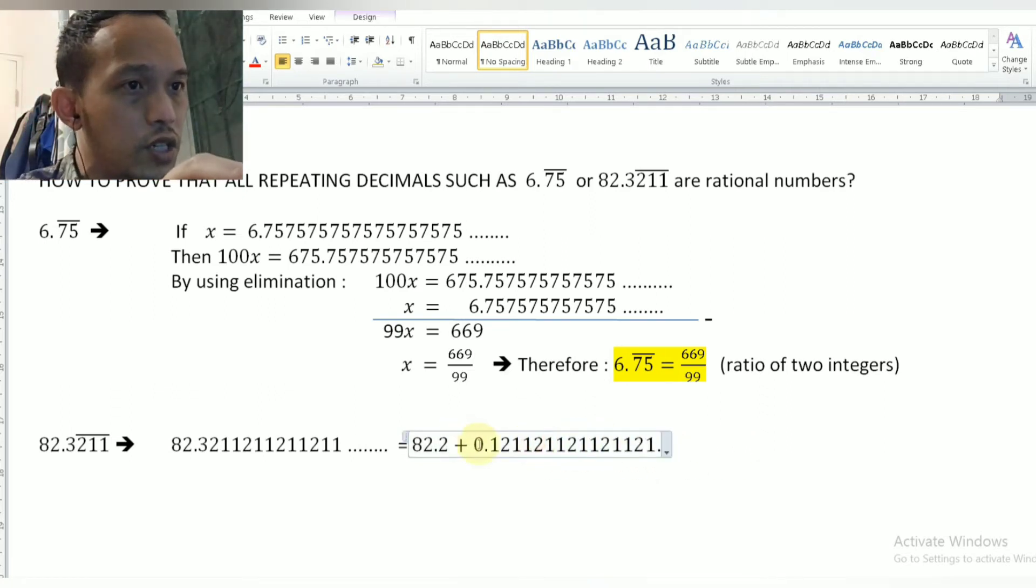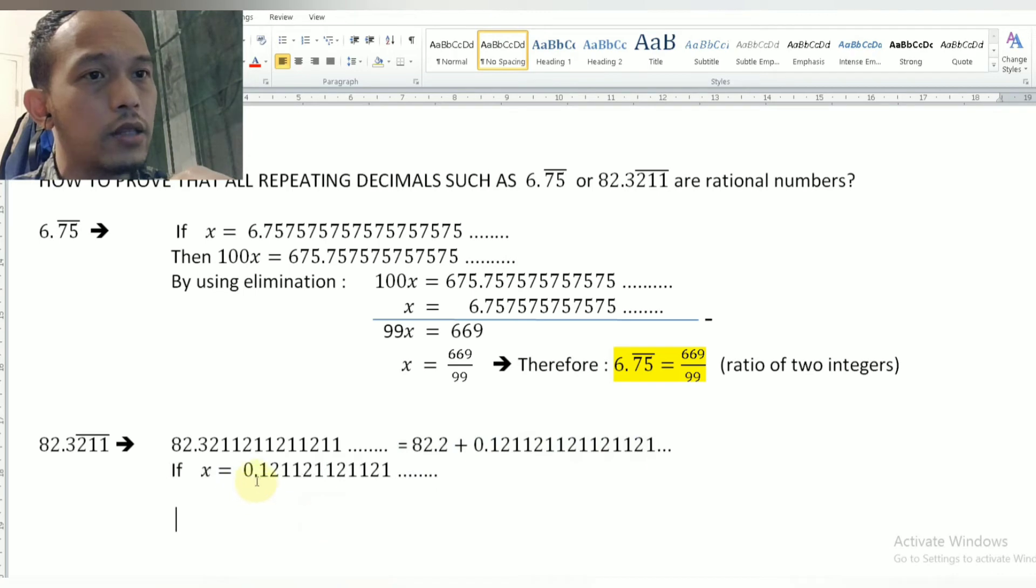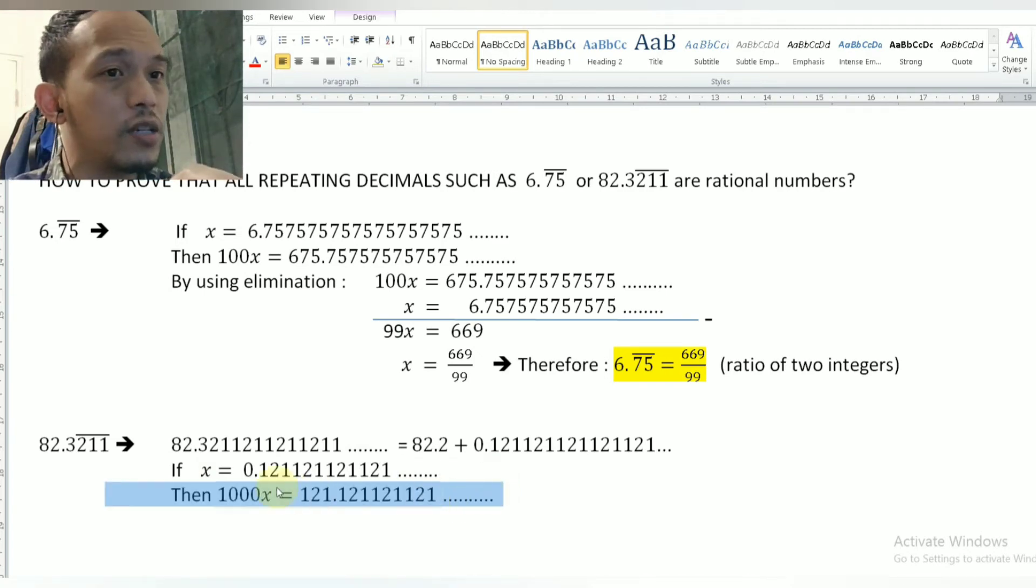Now I will focus on this one first. I will just leave 82.2 until then, we will discuss it later. So from this point, I assume that this 0.121121121 and so on will be equal to x. Okay, and then I will have another decimal when I multiply x by 1,000.